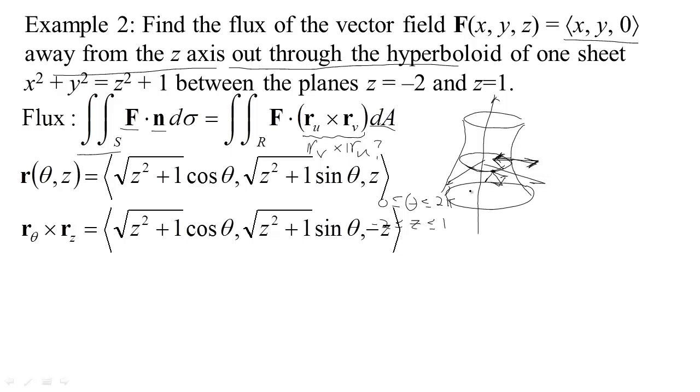But if we had, for example, computed r sub z cross r sub theta we would have had negative signs, and when we examined a particular point we could tell that that was the inward normal and not the outward normal. So just be careful that you read the problem and figure out which normal you want to use.